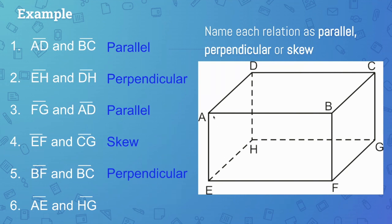Segment AE is over here, and segment HG — you figured out that those are skew. Very good.